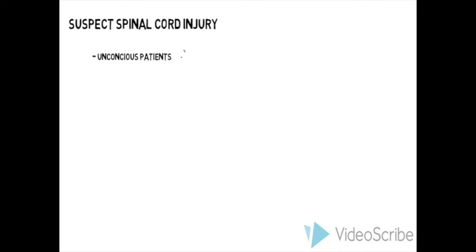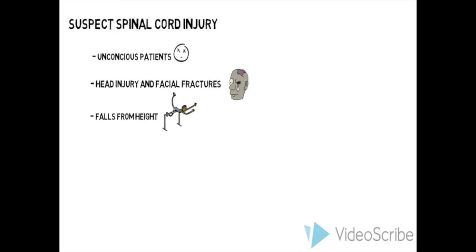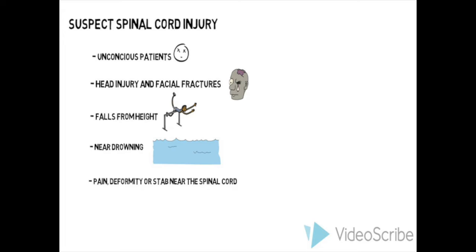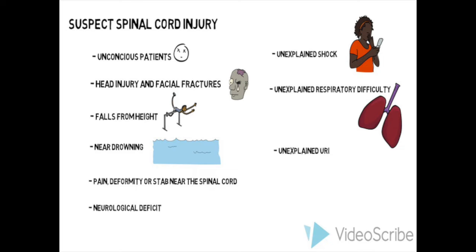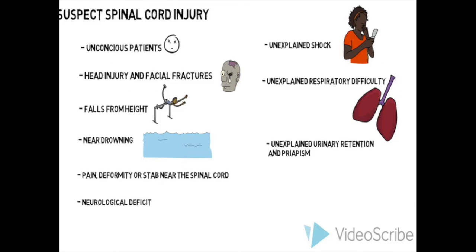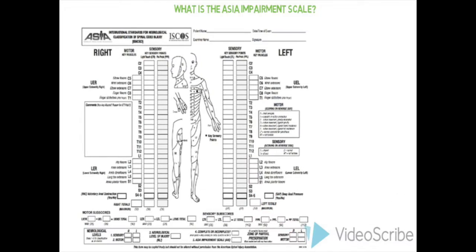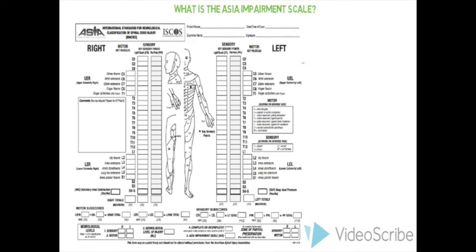It is important to have a high index of suspicion, as a spinal cord injury can cause devastating disability. Suspect spinal cord injury in any patient with loss of consciousness, head injury and facial fracture, falls from heights, near drowning experiences, pain, deformity, or stabs near the spinal cord, neurological deficit, unexplained shock, unexplained respiratory difficulty, and unexplained urinary retention and priapism.